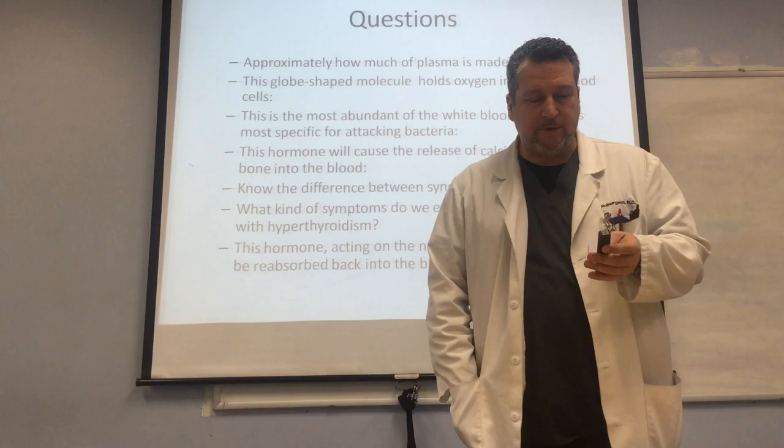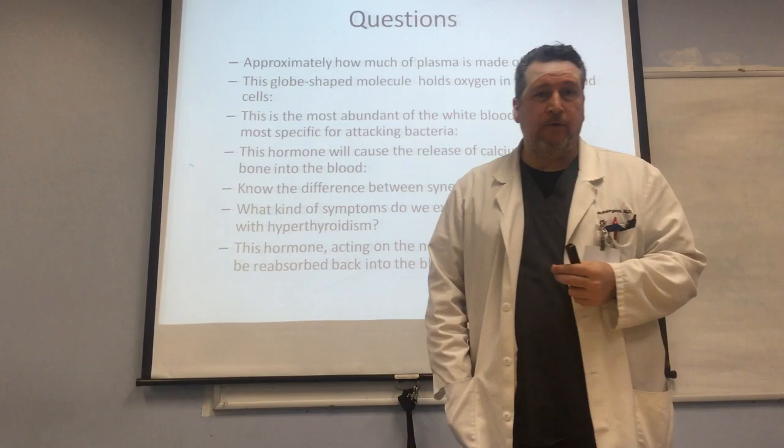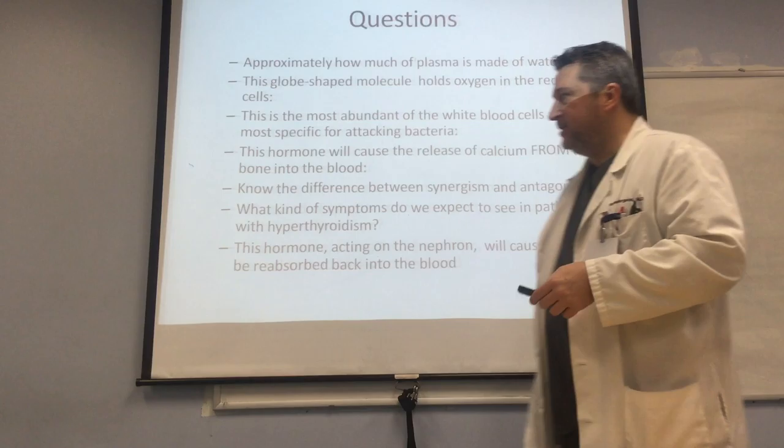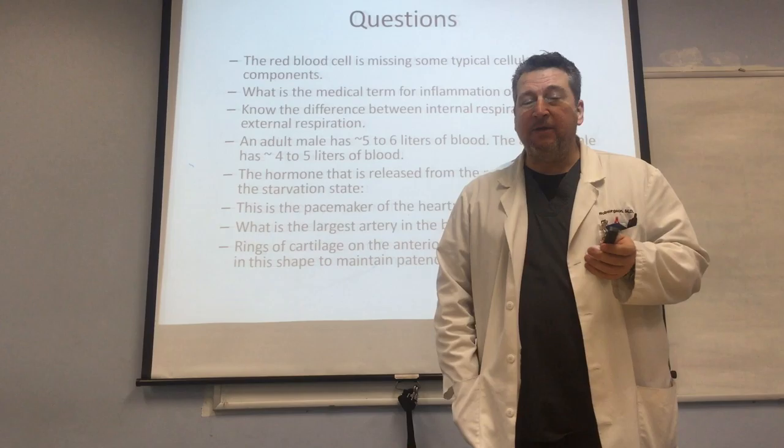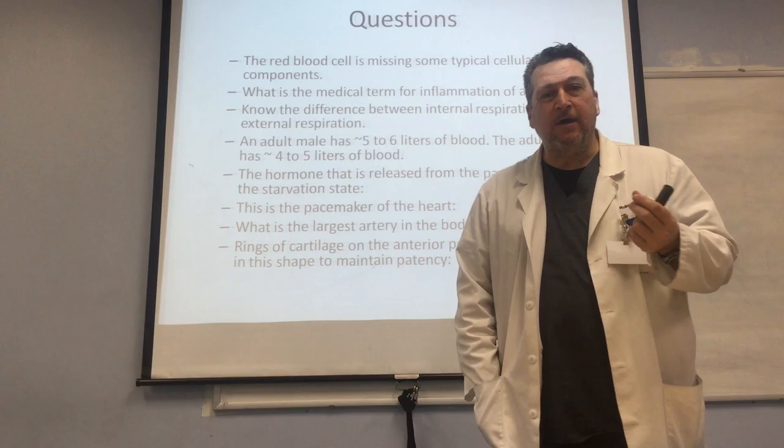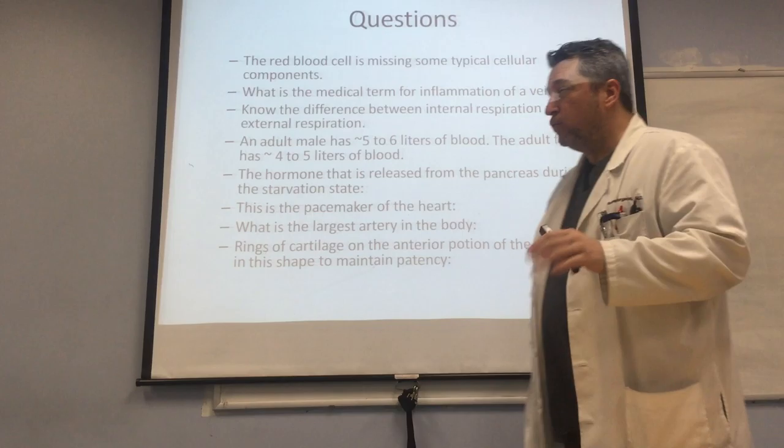The hormone acting on the nephron will cause water to be reabsorbed back into the blood. Remember, our kidneys filter out a huge amount of water along with the waste products, so one of the things we want to do is bring most of that water back — about 98% of it. The red blood cell is so packed full of hemoglobin that it's going to be missing other components that cells normally have, things like mitochondria and the nucleus. There's no room on the bus for those.